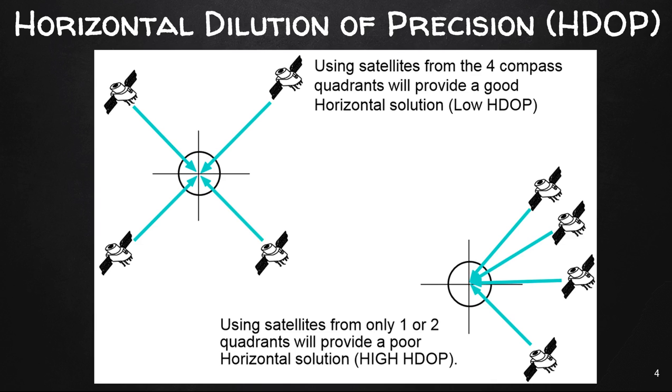Here is an example of using four satellites from the four compass quadrants that provide a good horizontal solution, low HDOP. You always want the lowest number possible. If you looked at this compass quadrant, imagine this is your sky plot in the Juno Trimble, you'd have one satellite in each one of those quadrants if you had four satellites. Using satellites from only one or two quadrants will provide a poor horizontal solution with a very high HDOP, which is not good for accuracy.